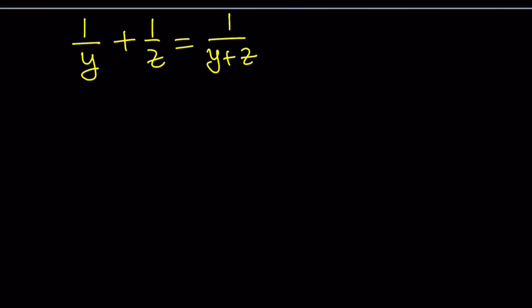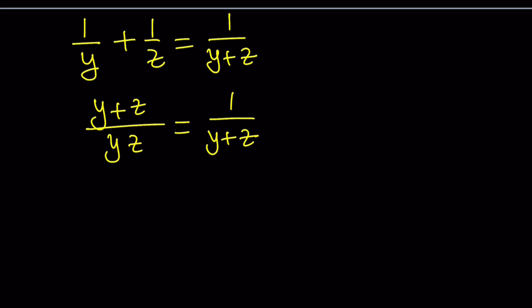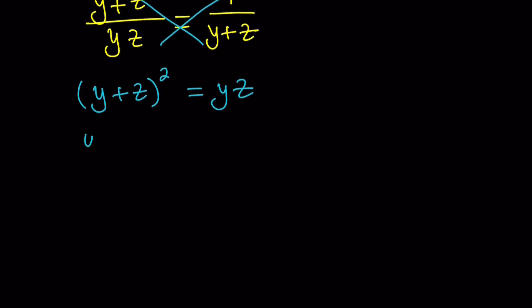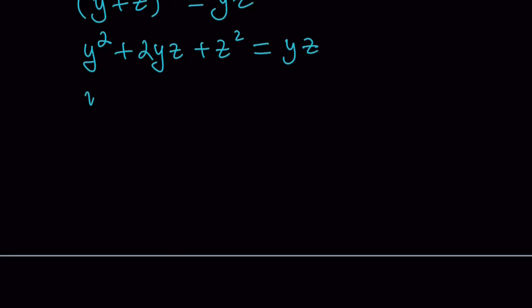So here's what we're going to do. We're going to make a common denominator, which gives us (y plus z) divided by yz, and set that equal to 1 over (y plus z). Now we cross multiply, giving us (y plus z) squared equals yz. Let's expand this first: y squared plus 2yz plus z squared equals yz, and then subtracting yz gives us y squared plus yz plus z squared equals 0.